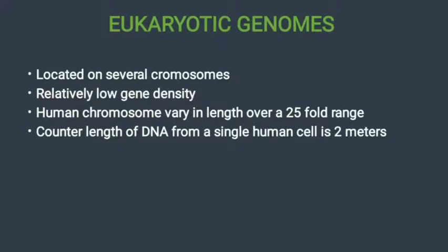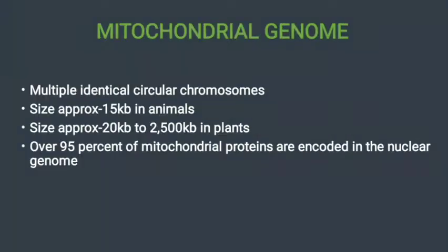Next we see eukaryotic genomes. Eukaryotic genomes are located on several chromosomes with relatively low gene density. Human chromosomes vary in length over a 25-fold range. The total length of DNA from a single human cell is 2 meters.